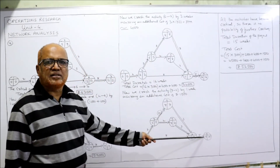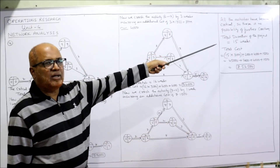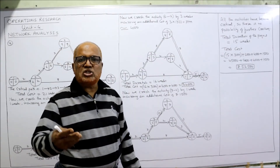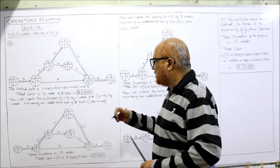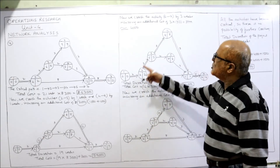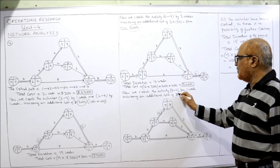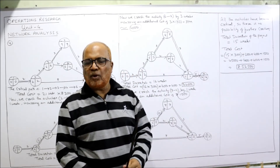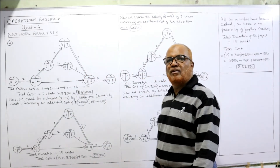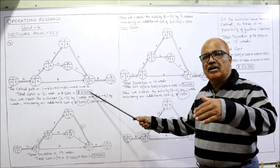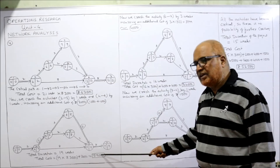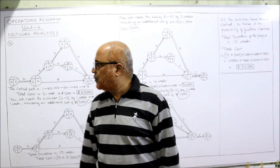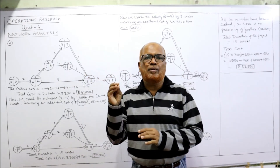Total duration of the project is 15 weeks. Total cost: 15×3000=45,000 plus additional costs — first iteration 2000, second iteration 4000, third iteration 1500 — total additional cost 7500. Project total cost = 45,000+7,500=52,500 rupees. Without crashing the cost was 63,000; after systematic crashing it came down: 63,000 → 59,000 → 54,000 → 52,500. This is the end of problem number 4. The next and final video will cover problem number 5.